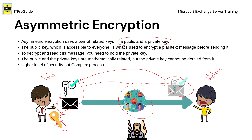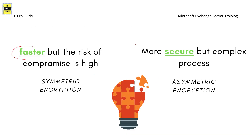This is how data is protected over the communication channel in asymmetric encryption. The advantage of asymmetric encryption is it is highly secure, but the process is very complex. At the same time, in symmetric encryption the level of security is a bit lower but the process is very fast. So we need to take the advantages of both symmetric and asymmetric encryption — and that is what TLS actually is.